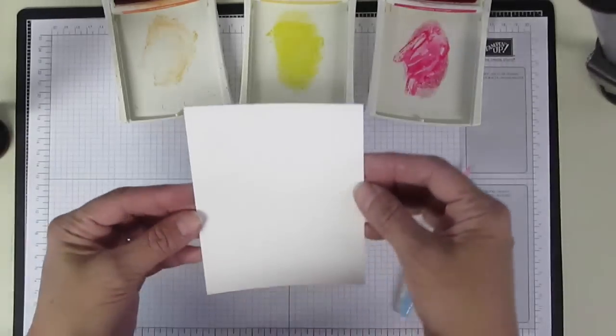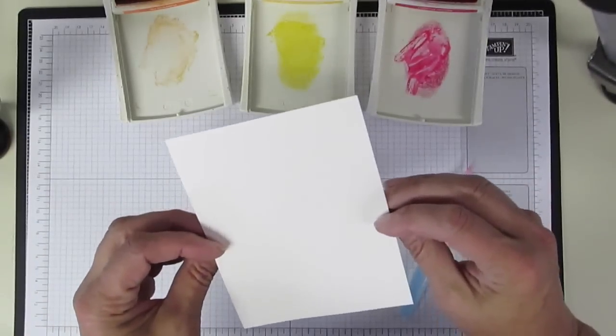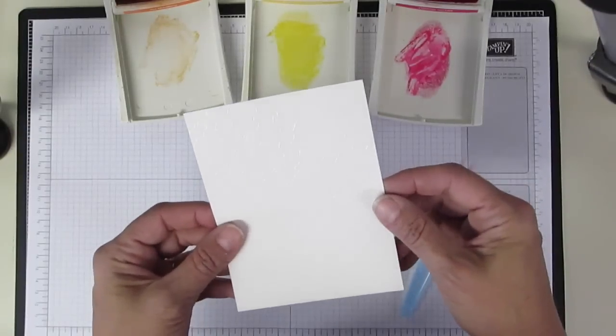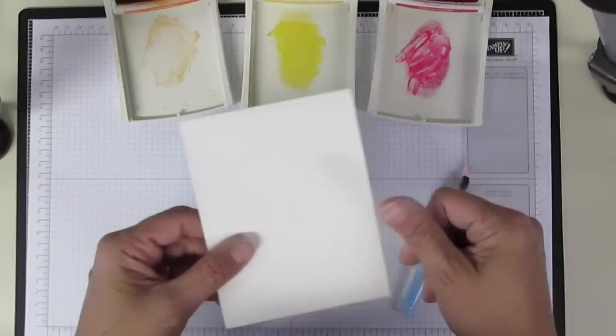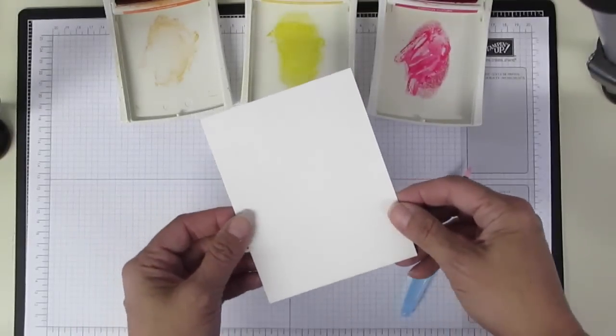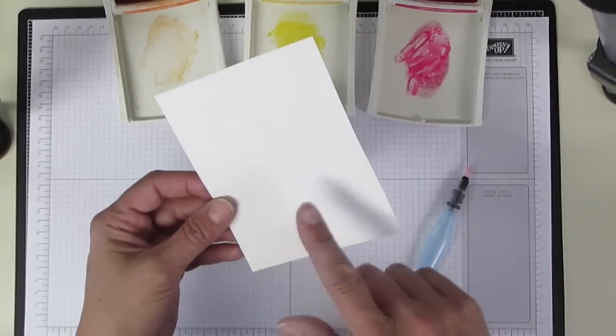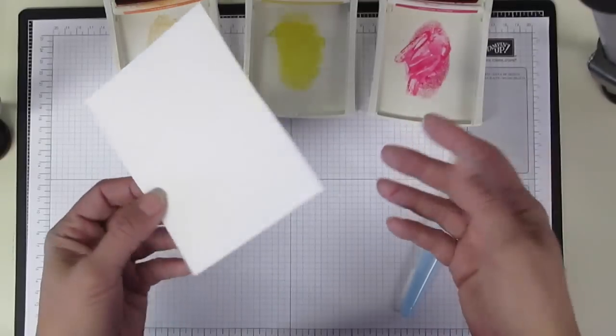First off, just to let you know, I'm using a piece of shimmery white cardstock from Stampin' Up! The difference between the shimmery white and the whisper white is that the shimmer is a little bit heavier and the water holds up better, and it's got a little shimmer to it, that's why it's shimmery white.